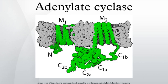The best known AC class is class III, or ACIII. ACIII occurs widely in eukaryotes and has important roles in many human tissues. All classes of AC catalyze the conversion of ATP to 3',5'-cyclic AMP and pyrophosphate.